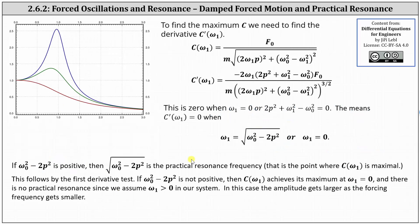To find the maximum c, we need to find c'(ω_1). We found the formula for c in the previous lesson and now we just call c a function of ω_1. Next we find its derivative and identify where the derivative is equal to 0 or undefined.